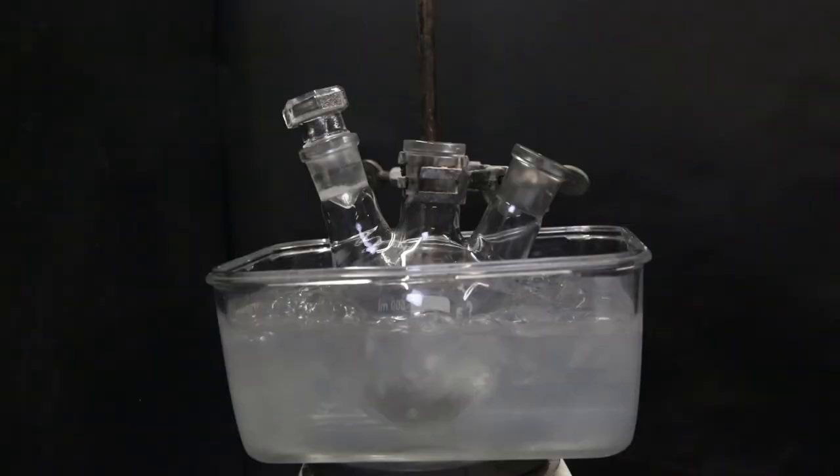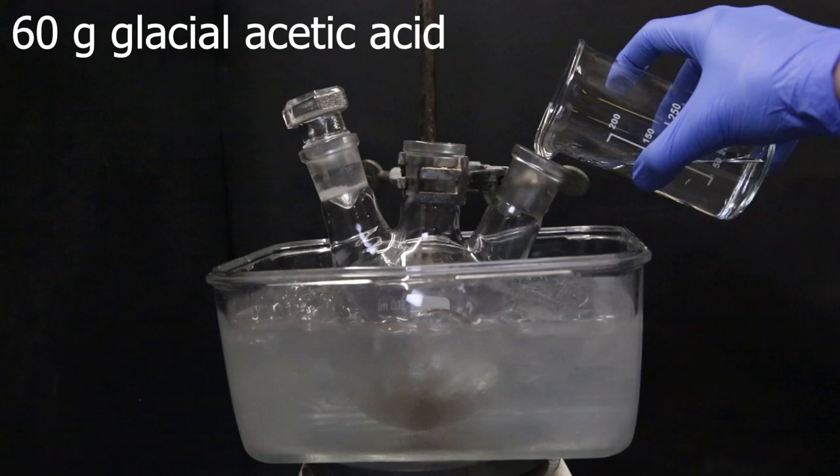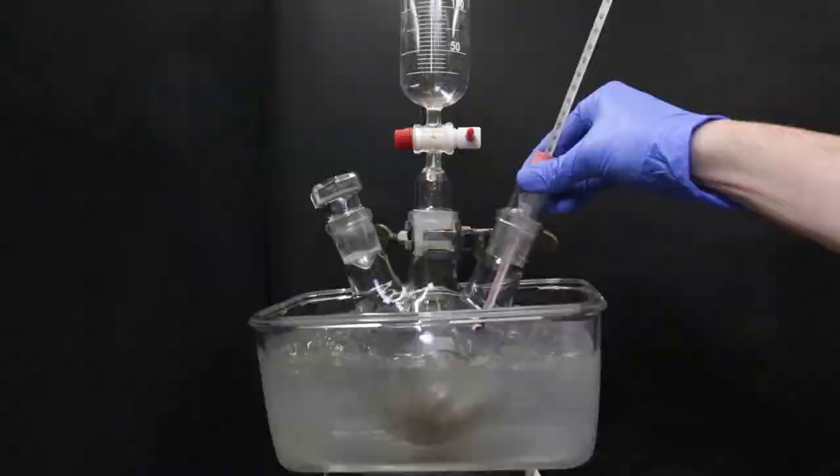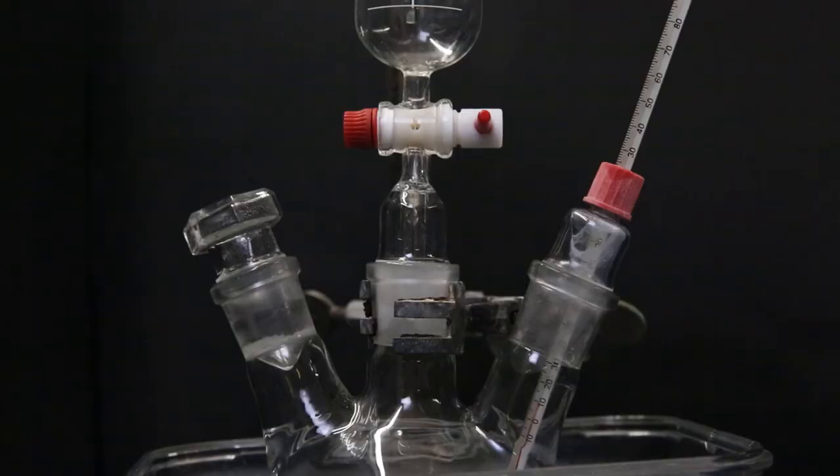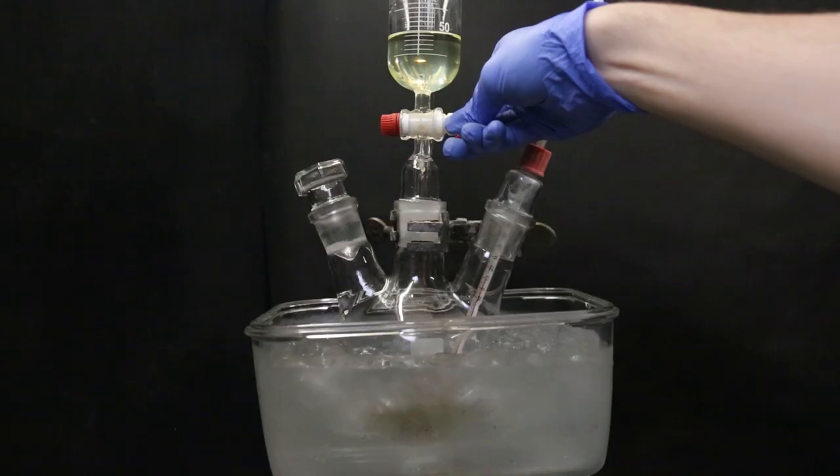Now the next step is to make the ionone, which is the final product. So I set up a flask in an ice bath and drop in a stir bar. I then add in 145 grams of concentrated sulfuric acid and 60 grams of glacial acetic acid. Then I attach a dropping funnel and a thermometer adapter and wait for the mixture to cool down to 10C. While waiting, I add in all of the pseudo-ionone from before to the dropping funnel. And when the temperature has reached 10C, I slowly drop in the pseudo-ionone and maintain the temperature between 10 and 15C.